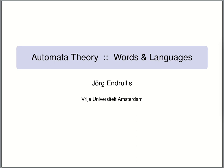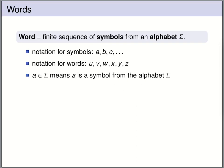Our first subject of automata theory are words and languages. A word is just a finite sequence of symbols from some alphabet sigma. Sigma, our alphabet, is just a set, and the elements of this alphabet we call symbols or letters. We use a, b, c, d and so on to denote symbols from the alphabet, and we use u, v, x, y, z — from the end of the English alphabet — to denote words.